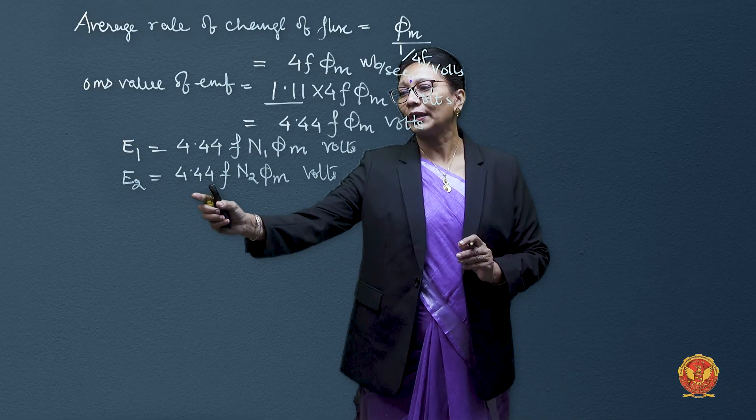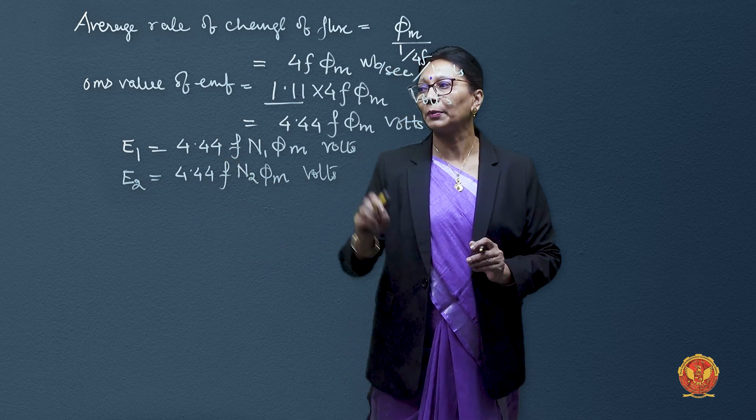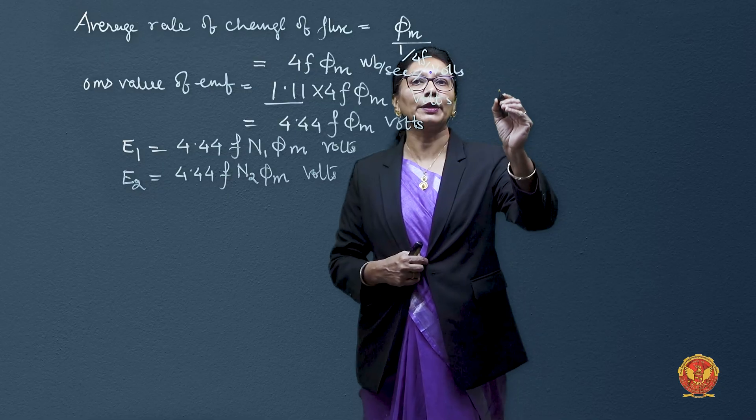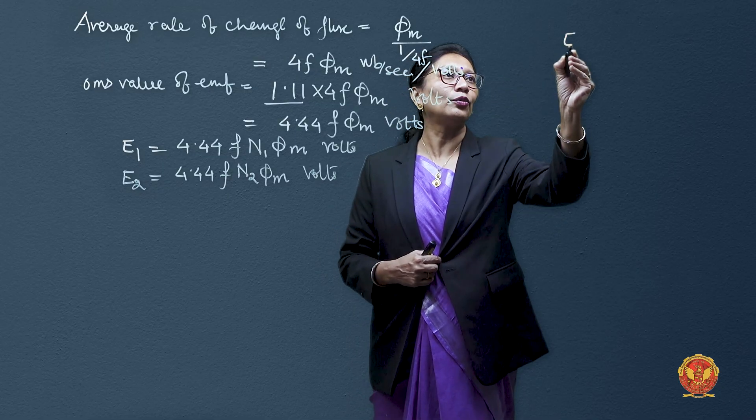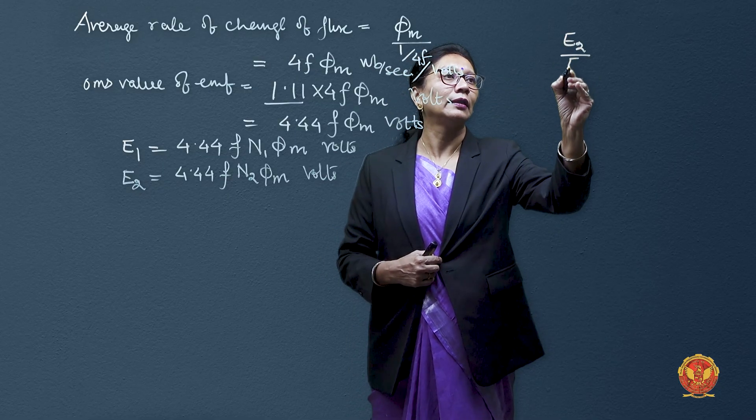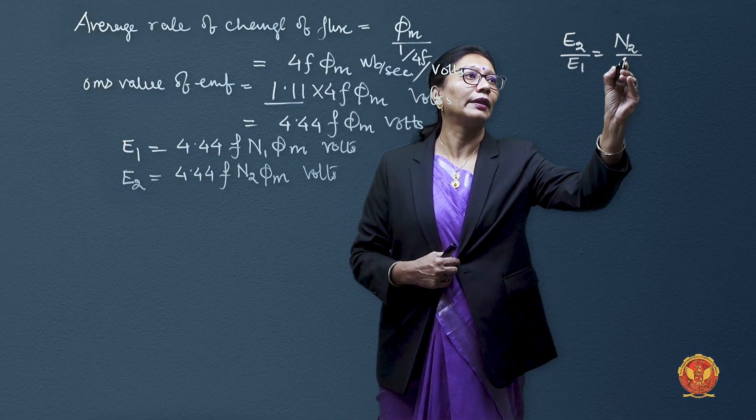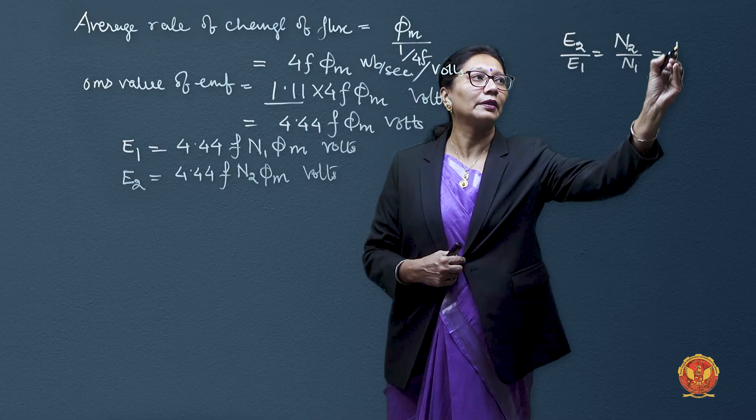We can relate them by an expression. If we divide the EMF induced in the secondary winding by that in the primary winding, what we obtain is E2/E1 = N2/N1, and this may be represented by a ratio constant K.